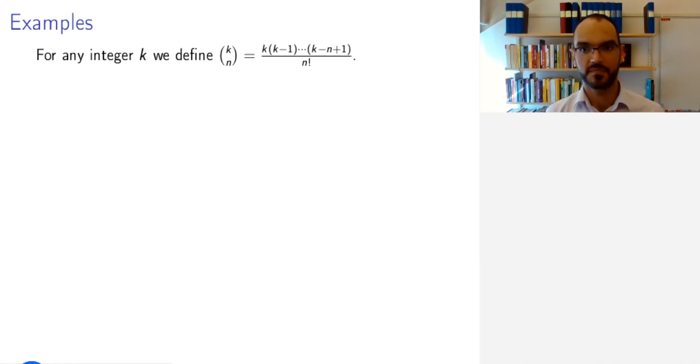Let's look at some examples. And to simplify notation, we will use the symbol k choose n, even when k is smaller than n or negative. So for any integer k, we define this as the product going down from k to k minus n plus 1, divided by n factorial. The first example is the Euler characteristic of the twisting sheaves. So we computed the dimensions of the cohomology of these twisting sheaves. And using that, you can deduce directly that the Euler characteristic is n plus d choose n.